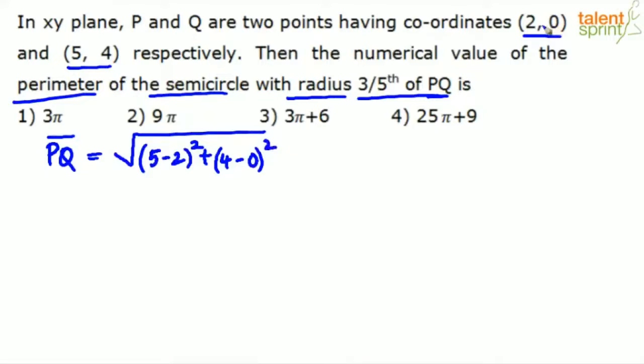This is like x₁, y₁. This is x₂, y₂. So you can take x₂ minus x₁ square plus y₂ minus y₁ square under root or x₁ minus x₂ square plus y₁ minus y₂ square under root. How does it not affect the answer?